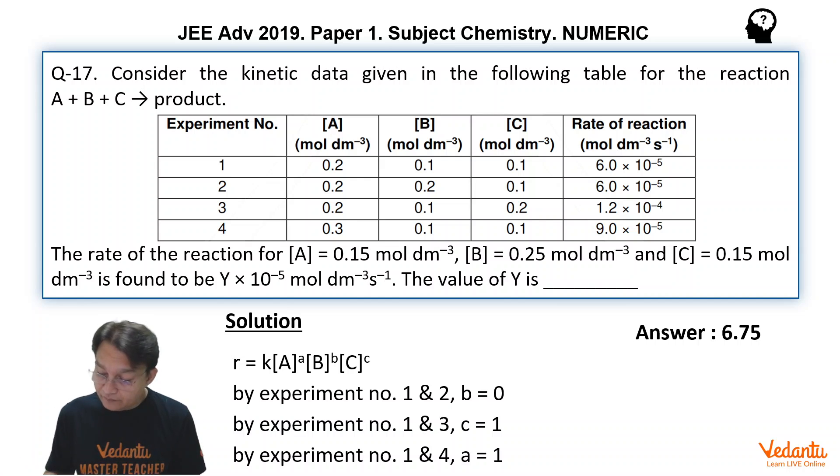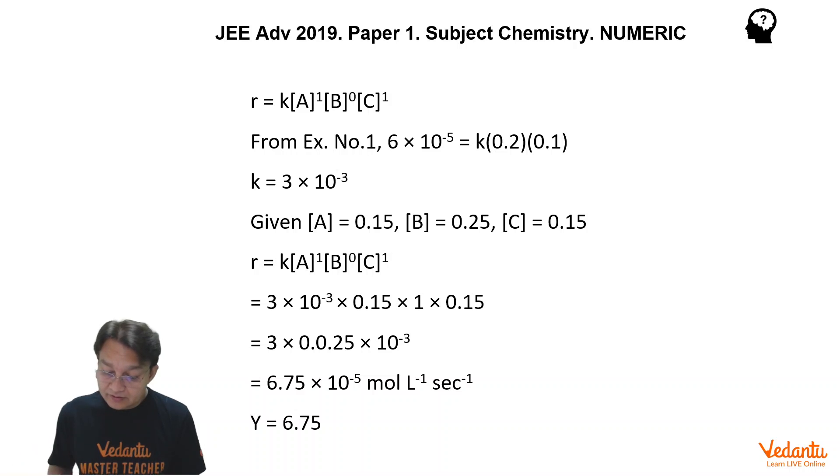So, once we determine the order of these reactions, we can write rate equals K times A raised to the power of 1, B raised to the power of 0, C raised to the power of 1. And from experiment number 1, 6 into 10 to the power of 5 equals K times 0.2 into 0.1, we can find the value of K.